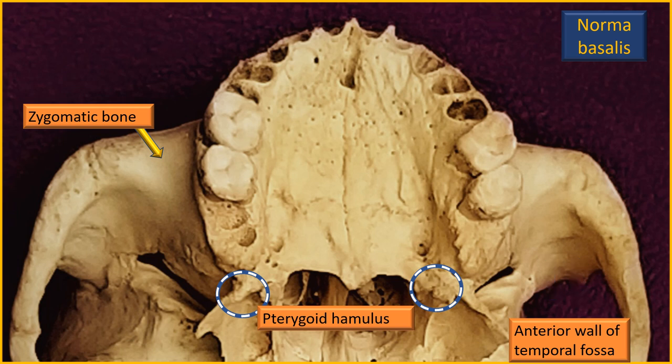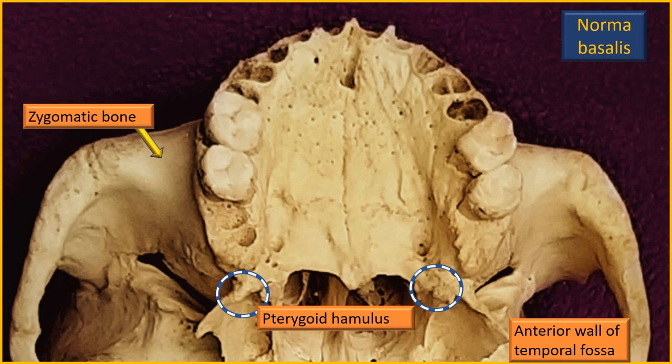Moving on laterally, there are two flashing arrows and on the other side a single non-flashing arrow. The single arrow refers to the zygomatic bone. The two flashing arrows also refer to the zygomatic bone, but specifically show the anterior wall of the temporal bar and infratemporal fossa. The location depends on whether it is above or below the zygomatic arch.